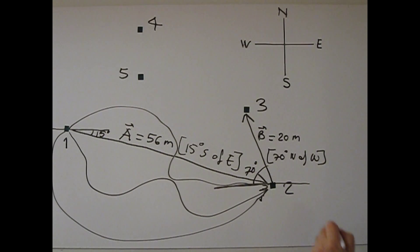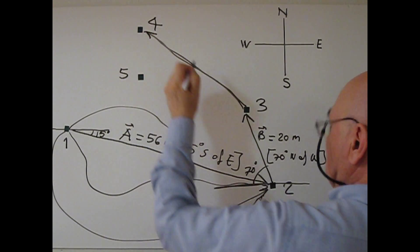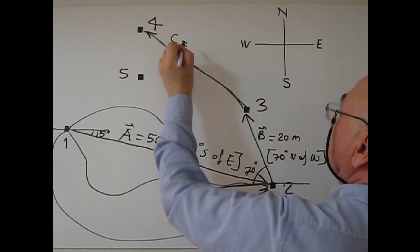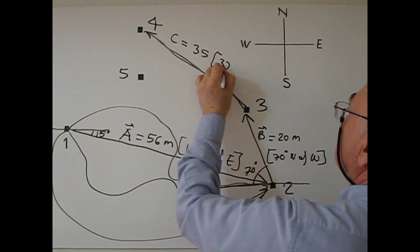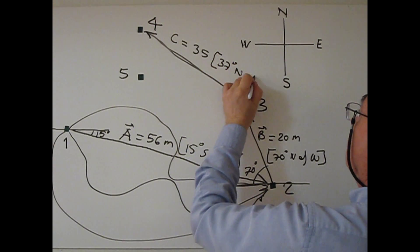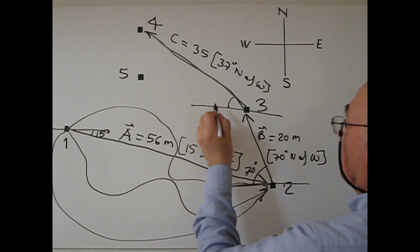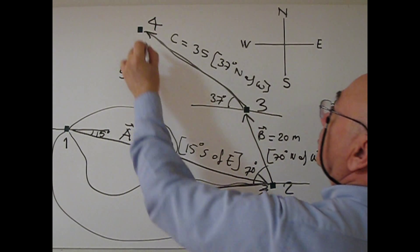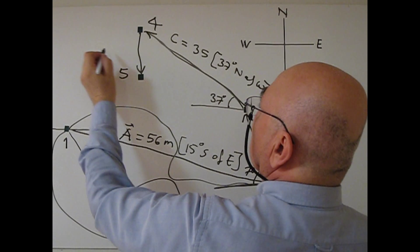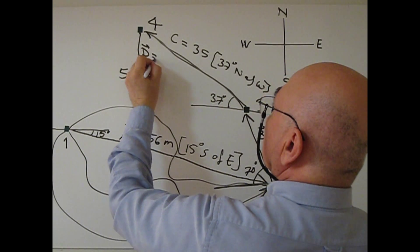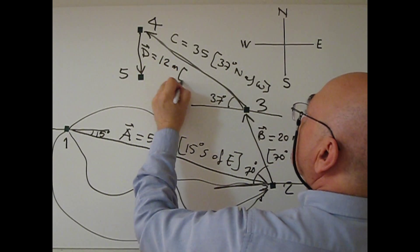From point 3 to point 4, I connect this with a straight line again. This is vector C, at 37 degrees north of west. Again, I draw the west-east line, and this angle is 37 degrees. From location 4 to 5, this is just south — I call this vector D, with a distance of 12 meters south.